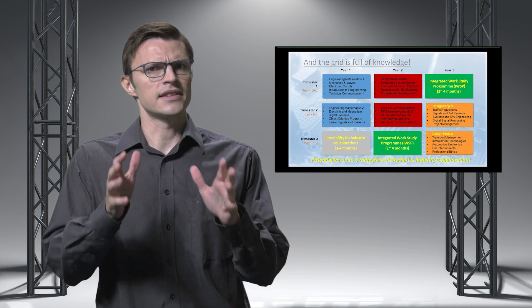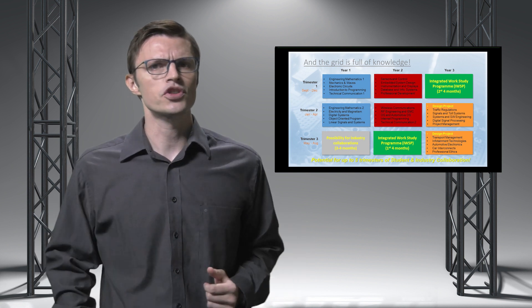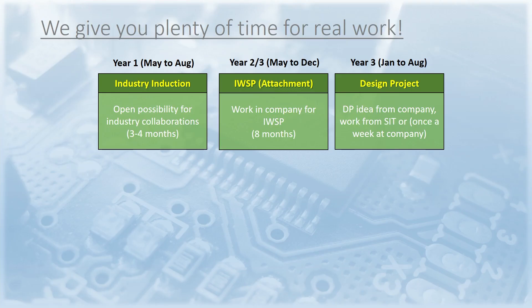The remaining activities — shown in yellow — represent the potential of five trimesters of industry attachment. This begins with the possibility for a three-to-four-month internship in year one, followed by the big IWSP in years two and three, and ending with the individual design project, which can also be done in collaboration with industry. This means that out of the 36 study months, you could be attached to a company for up to 20 months — more than half of your entire study.